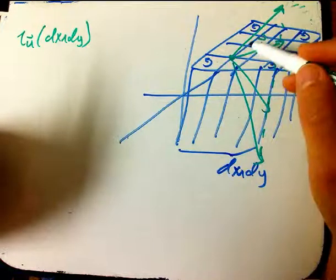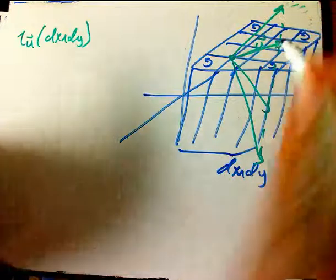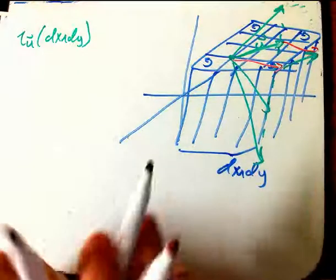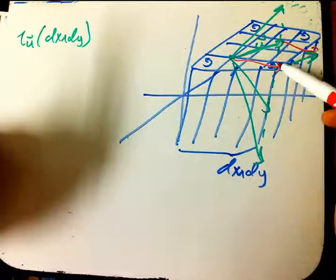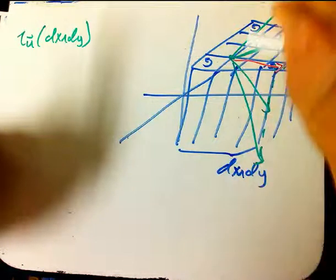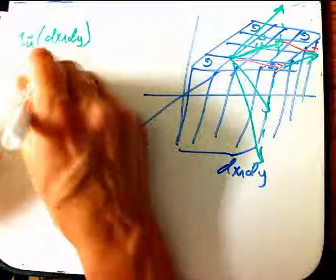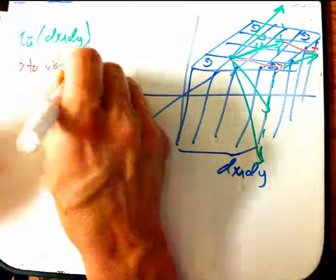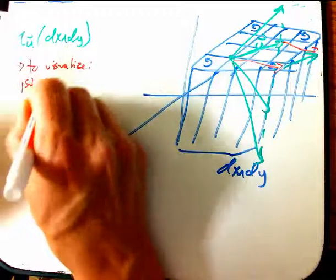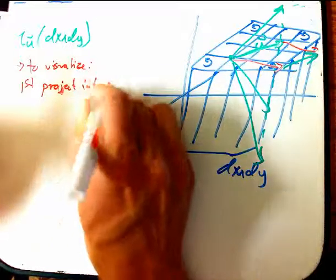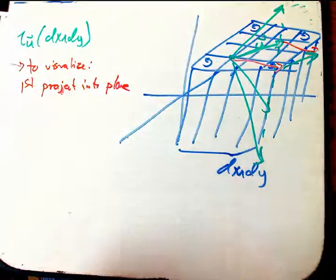The reason for that is that if I build a parallelogram with U and some other vector like this, and then I add to everything, I add some multiple of E3, that's just going to shear it up and down. It's not going to affect how many of these tubes get cut. So to visualize this, just first project into the plane, and then you get the old picture.